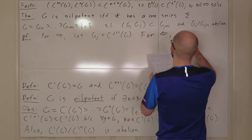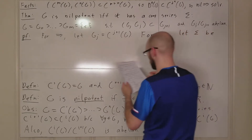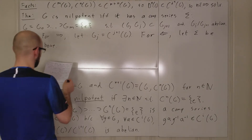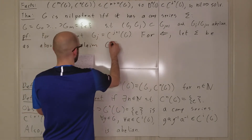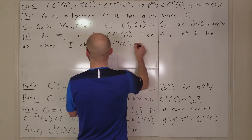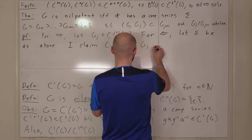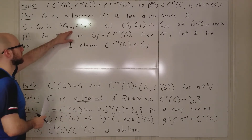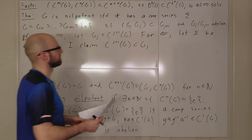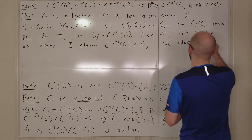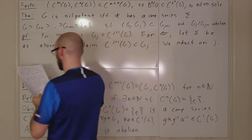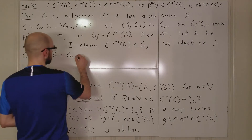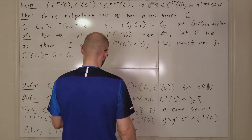For the backward direction, let sigma be a composition series as described above. I claim C^{j+1}(G) is contained in G_j, for j between 0 and m. We prove this by induction on j. The base case: C^1(G) is defined to be G, which equals G_0. That takes care of the base case.